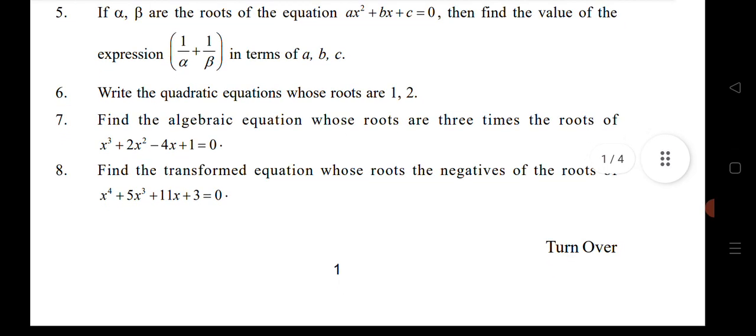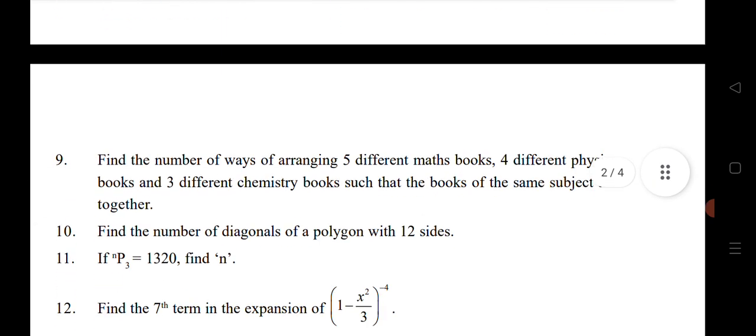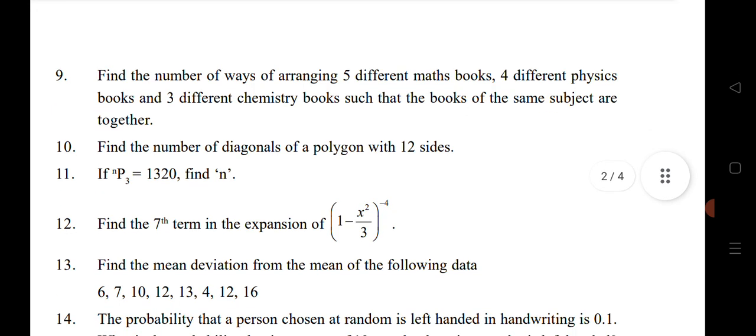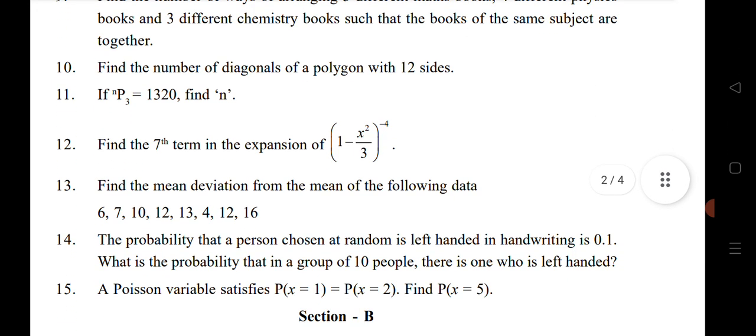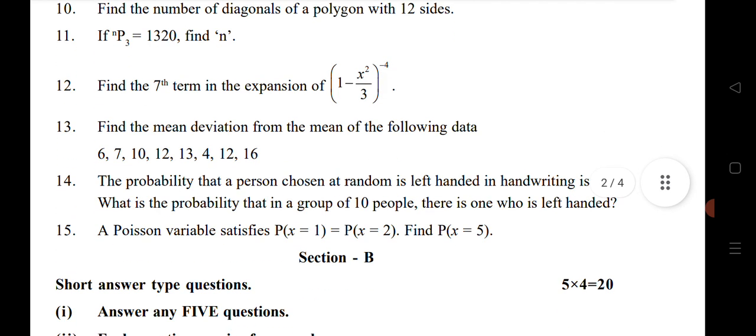Nine, ten, eleven is Permutation and Combination. Twelfth question is from Binomial Theorem. Thirteenth question is from Measures of Dispersion. Fourteen, fifteen is from the chapter Random Variable.